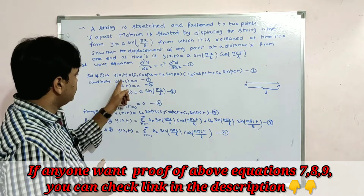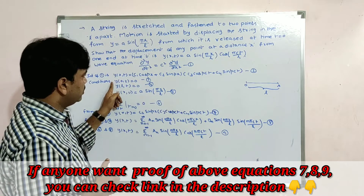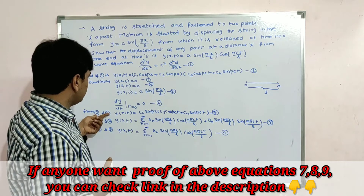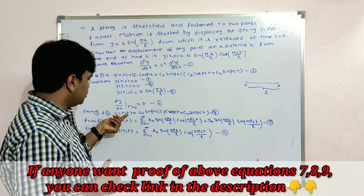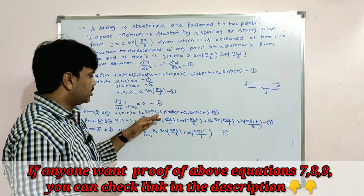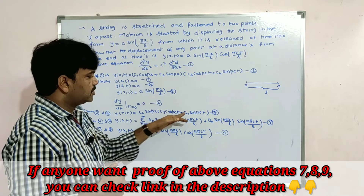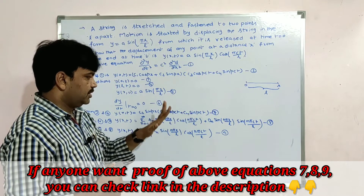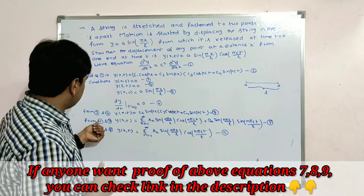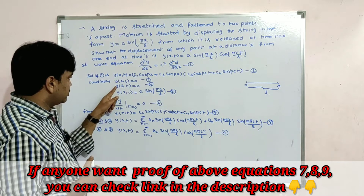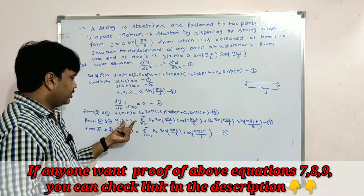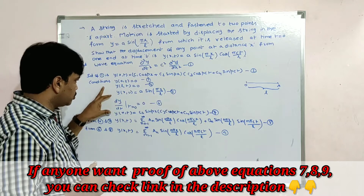From condition 3 and the solution (equation 2), applying these two conditions we get y(x, t) = C₂ sin(px) · (C₃ cos(pct) + C₄ sin(pct)).